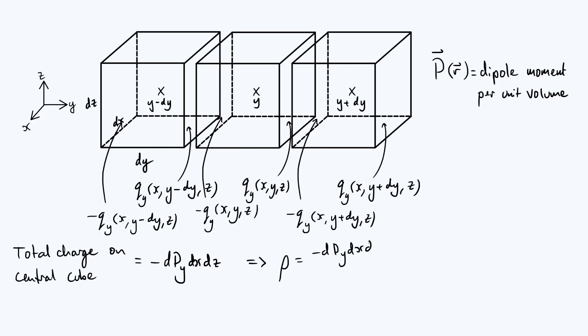The dx dz cancels and you get minus dP_y by dy. I'm writing this as a partial derivative now because we're interpreting our ratio of differentials as a derivative, but P_y can depend on all three coordinates, so we're emphasizing that we're specifically differentiating with respect to y here.